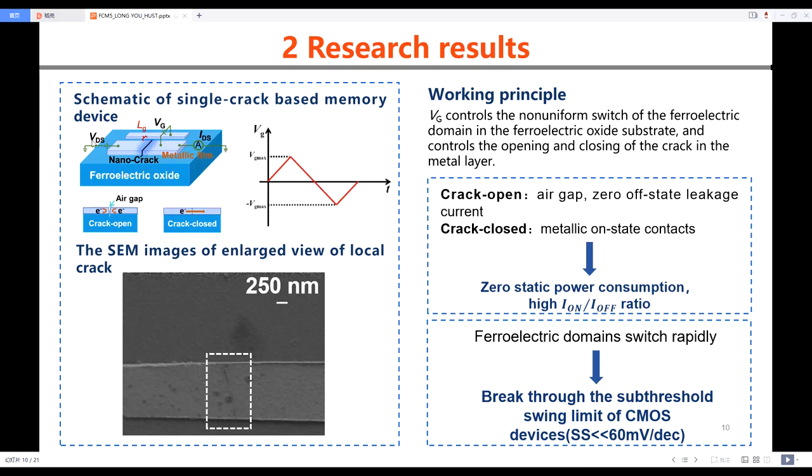VDS serves as the reading voltage to detect the resistance, which is decided by the state of the crack. When the crack is opened, a nanocrack air gap is formed, and the current path is cut off, leading to a high resistance state. The opposite VG enables the closing of the crack, and the current path is recovered, corresponding to a low resistance state. Thereby, we can find that it is non-destructive readout process here. The SEM image shows the morphology of the crack.